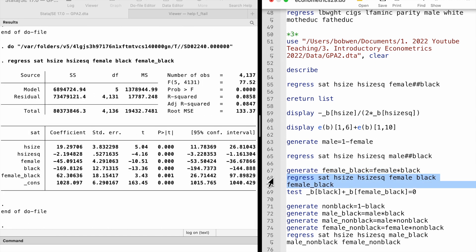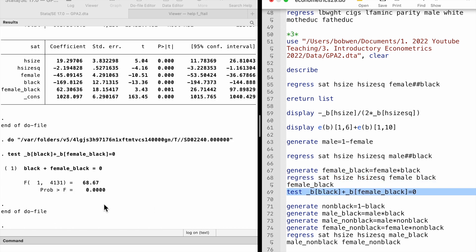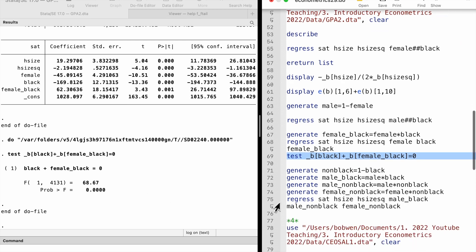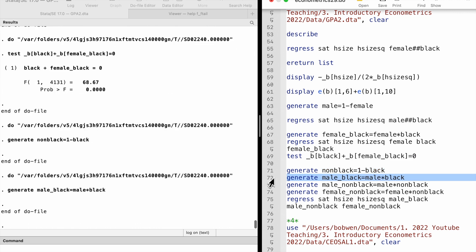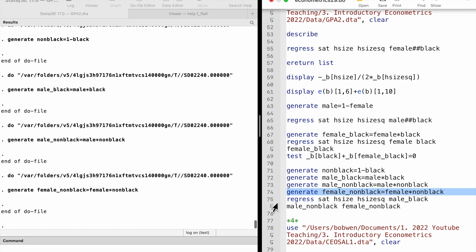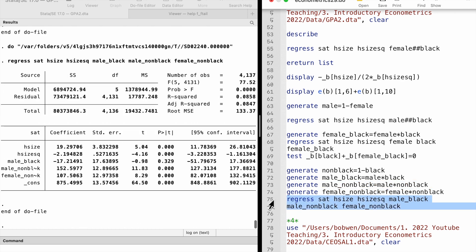Another way is to perform an f-test after the original regression. We test whether the sum of the coefficients on the last two variables is zero. It gives the same conclusion. The third way is to divide the students into four groups: black male, non-black male, black female, and non-black female. Using the black female as the base group and adding three dummy variables to the model, we can find the estimate and its t-statistic for the non-black female dummy.